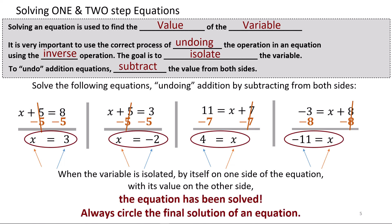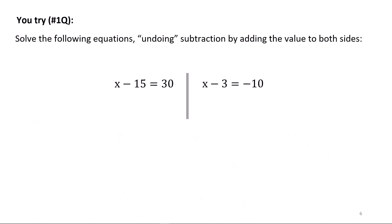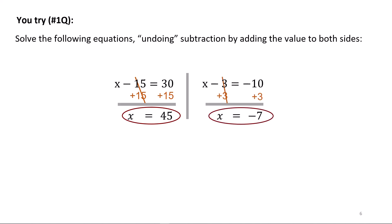Always circle the final solution of an equation. Try these two equations yourself. The minus 15 needs to be undone using the inverse operation of addition, so we add 15 to both sides, cancel the two 15s, and we get x equals 45. In the second equation, we add 3 to both sides, cancel the 3s, giving x equals negative 7.